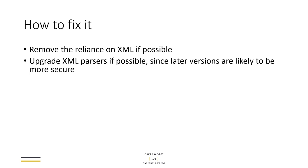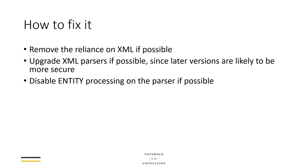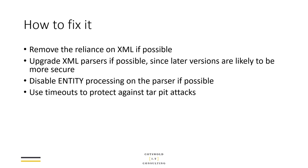Another option is to upgrade any XML parsers you're using. For example, in older versions of .NET the parsers were vulnerable by default, whereas in newer versions external entities are not processed by default — you have to explicitly enable them. Upgrading doesn't guarantee security but is more likely to help. Even better, if you can explicitly disable entity processing entirely, all of these attacks go away, since they all rely on the entity tag.